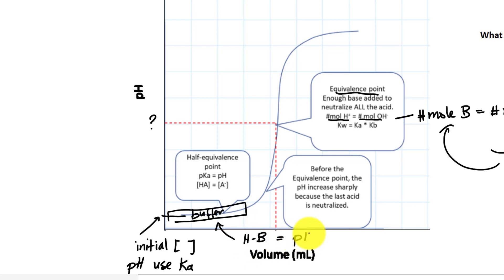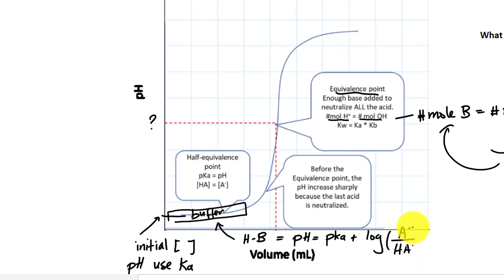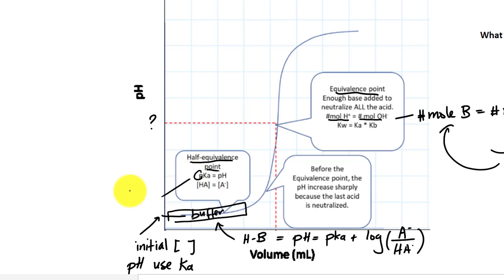The Henderson-Hasselbalch equation gives us pH equal to pKa plus the log of the conjugate base concentration over the acid concentration. And at the half-equivalent point, it's even easier: pH is equal to pKa, where the letter P means negative log. At the equivalent point, all the acid has been neutralized.